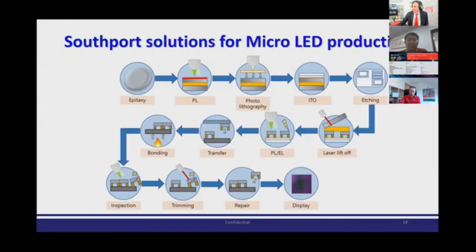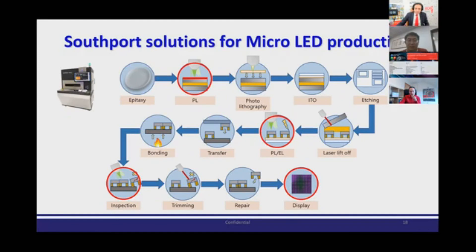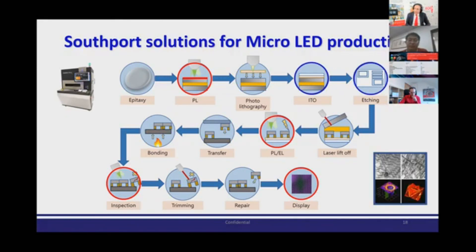This is the typical micro LED production process. With our material analysis, you can do PL, EL, and optical inspection. With our micro 3D module, you can do inspection of the ITO film or surface morphology of the etching process. With our multi-focus system, we can provide a better way to control laser spots for laser lift-off and laser trimming processes.